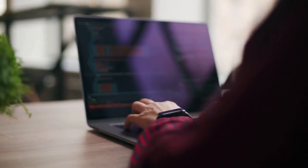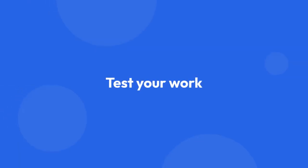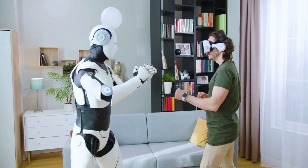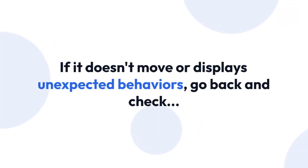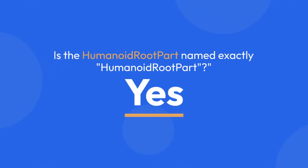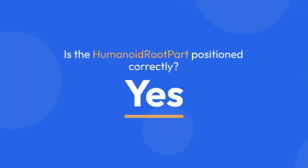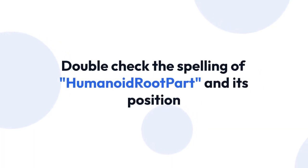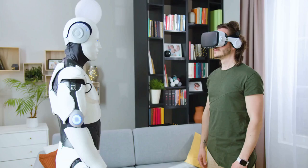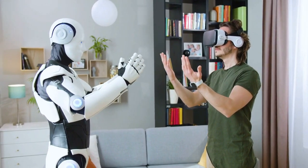You might need to reposition your humanoid root part if the character doesn't seem to be moving or animating properly after adding the humanoid. Step 5: Test your work. You should now be able to move your character. If it doesn't move or displays unexpected behaviors, go back and check: Is the humanoid root part named exactly HumanoidRootPart? Is the humanoid parented to the character model? Is the humanoid root part positioned correctly? Double-check the spelling and position — these are extremely common causes of issues. If the humanoid isn't using the part, you might see an error message in the output window giving you clues about what went wrong.